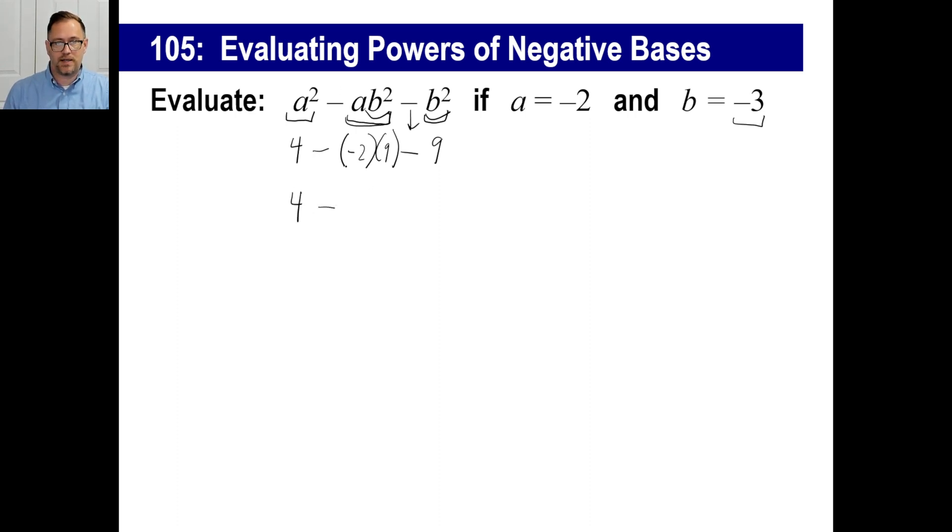But let's just do the rest of it. 4 minus, okay, now let's do this part right here. What's negative 2 times positive 9? Negative 18. And I'm copying my negative 9 again. Okay, then I'll just go 4. And then what is the opposite of negative 18? 18. And then 4 plus 18 minus 9. And that'll give us 13. There you go. That's all there is to it.